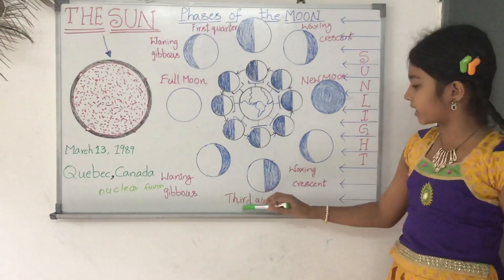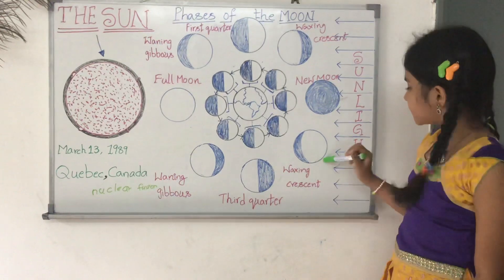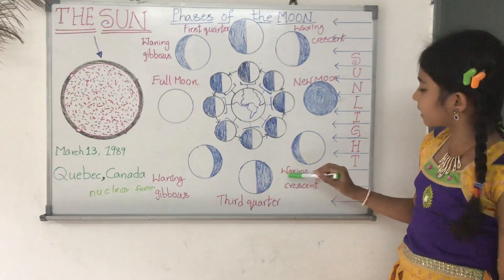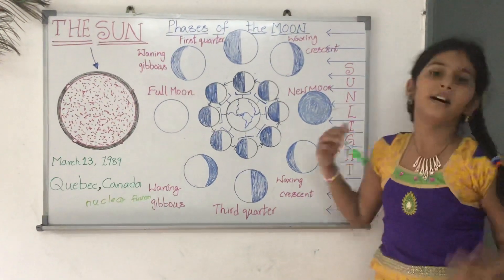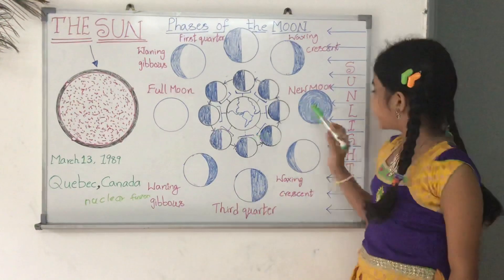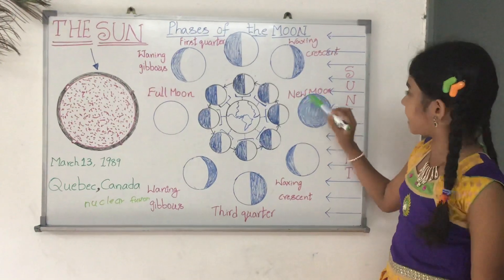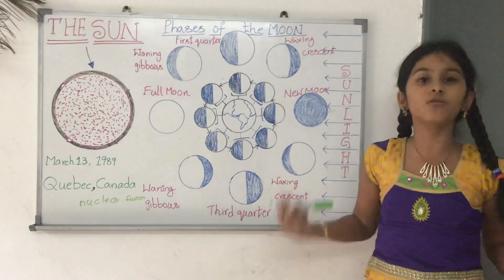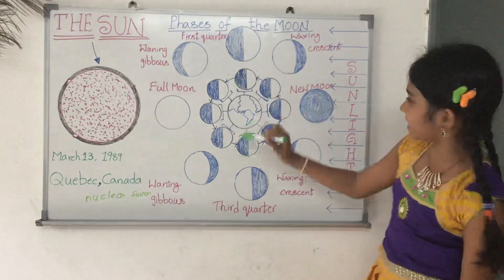Next one, we get third quarter. And the seventh one, we get waxing crescent again. And then the last one, number 8, is what we get — it's a new moon. And this is the sunlight.